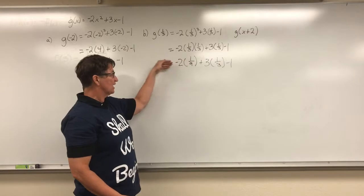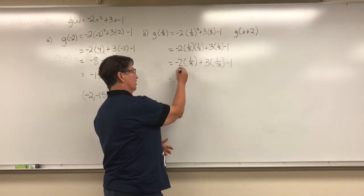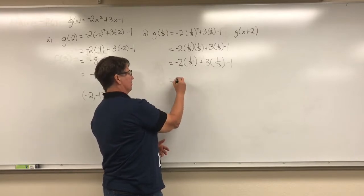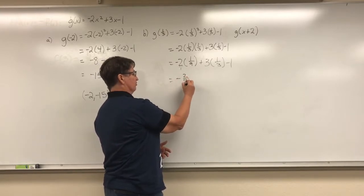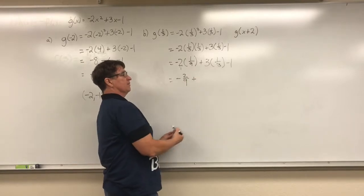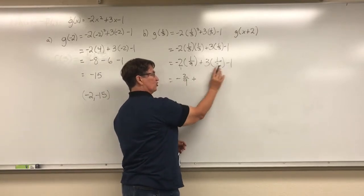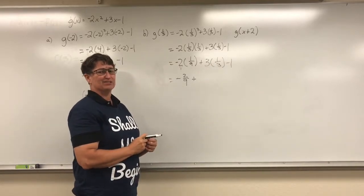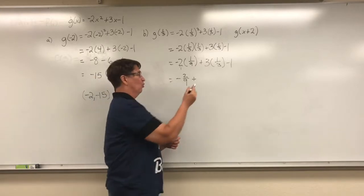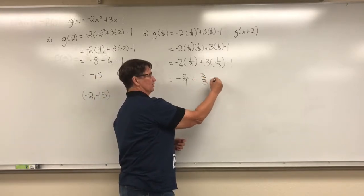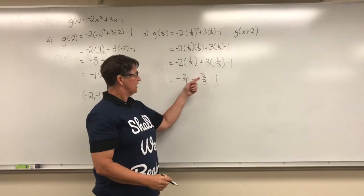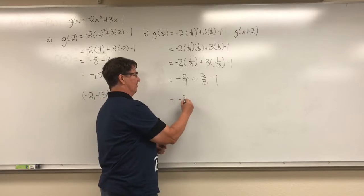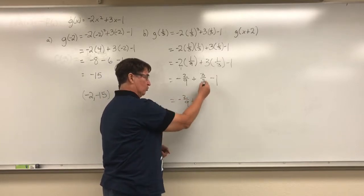Again, when I'm multiplying with fractions, I just multiply straight across — numerator times numerator, denominator times denominator, which in this case is a 1 — so I end up with negative 2 ninths. Then I'm going to multiply straight across and I end up with 3 over 3. But 3 over 3 is just equal to 1. You can see that 3 divided by 3 is just equal to 1, so we can simplify that and just make it 1.